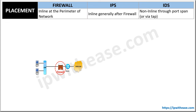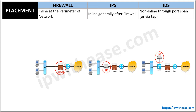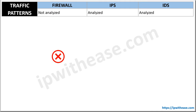When it comes to placement of these security devices, the firewall is placed at the perimeter or edge of the network, much closer to the internet entry and exit points. IPS should preferably be provisioned after the firewall, and IDS can be positioned in non-inline mode, also called span mode. A key distinction of the firewall from the other two is that it does not analyze traffic patterns, while IPS and IDS have the key functionality to analyze traffic flow or patterns.